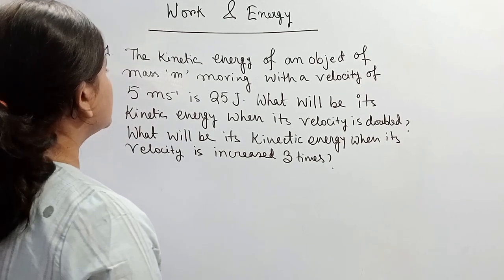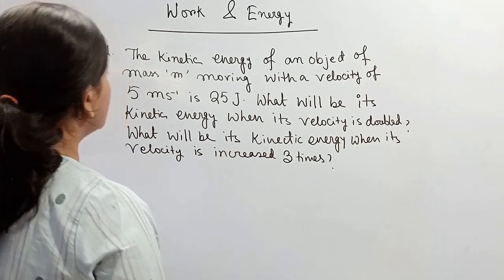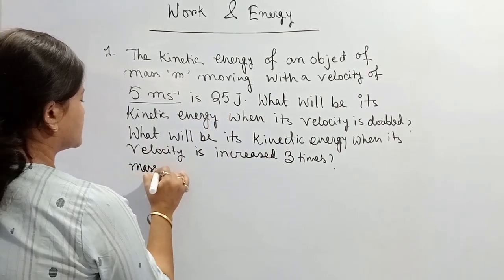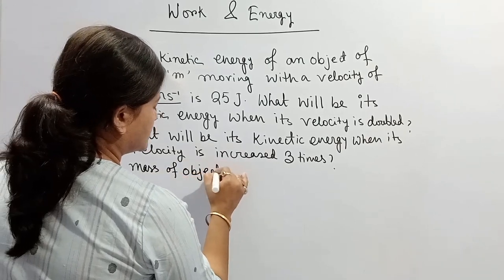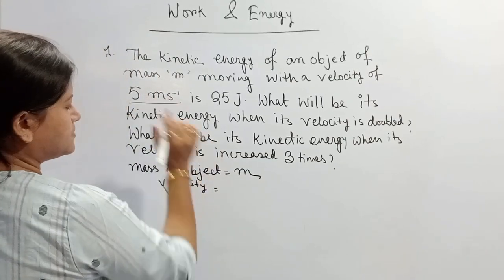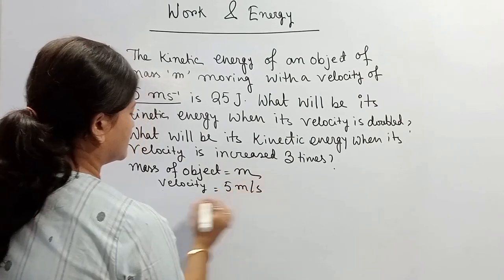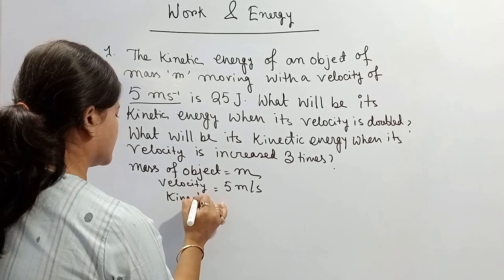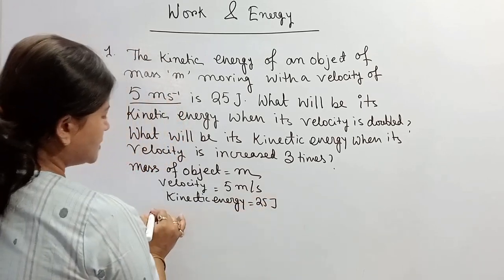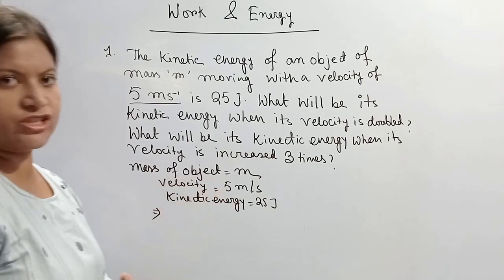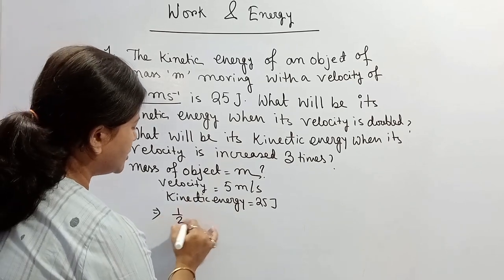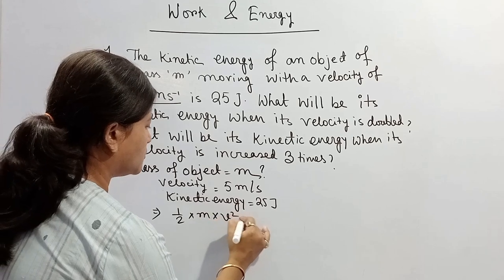The kinetic energy of an object of mass M moving with velocity 5 meters per second is 25 J. Mass of the object is M, velocity is 5 meters per second, and kinetic energy is 25 J. Now what is the formula of kinetic energy? Because velocity and kinetic energy are given, we have to find out the value of the mass. So half into M times V squared equals 25 J.